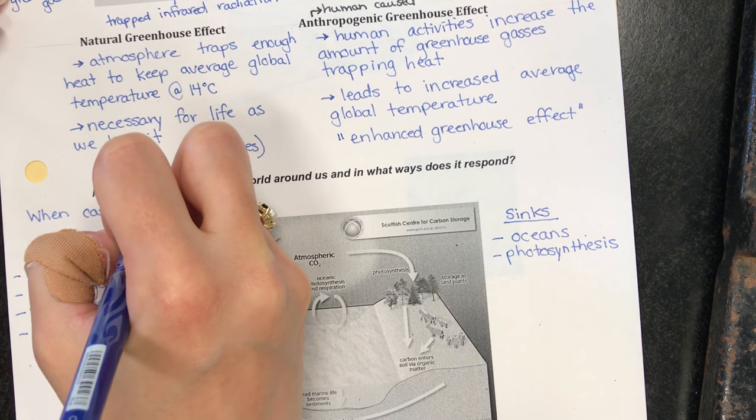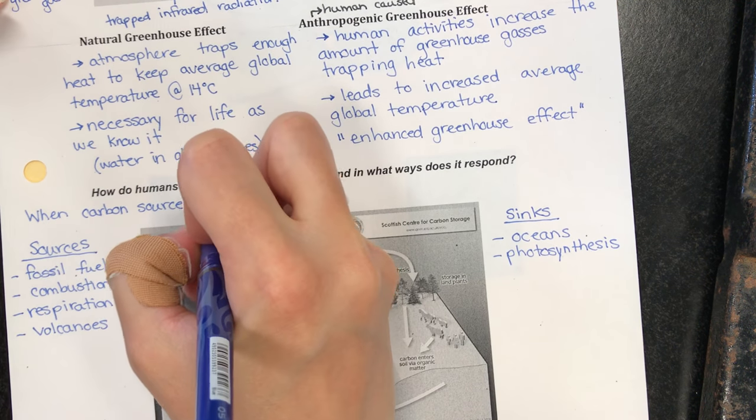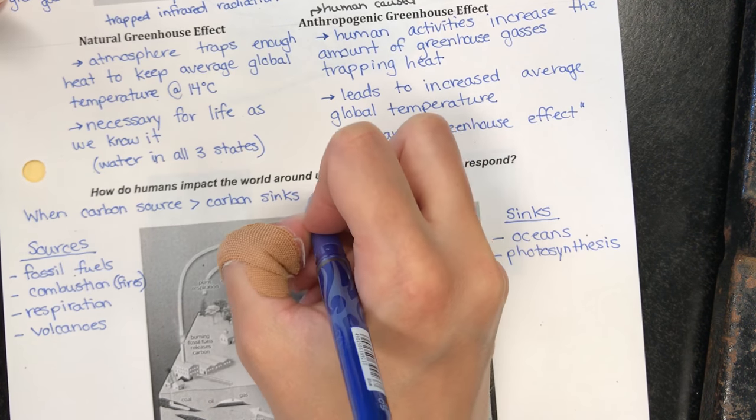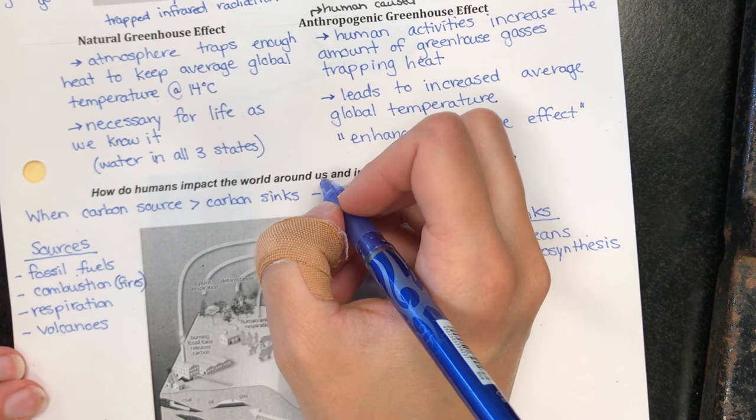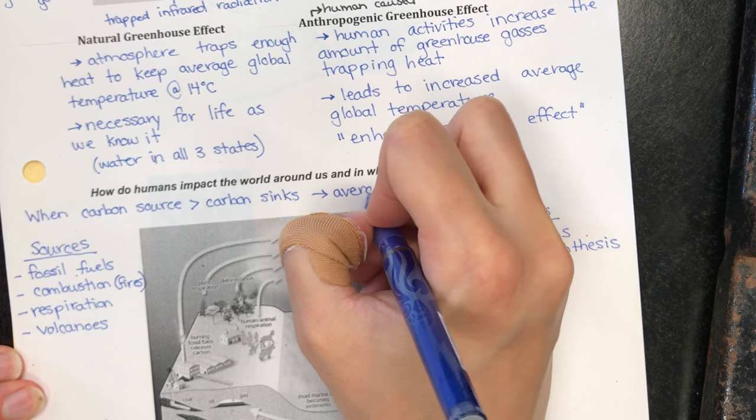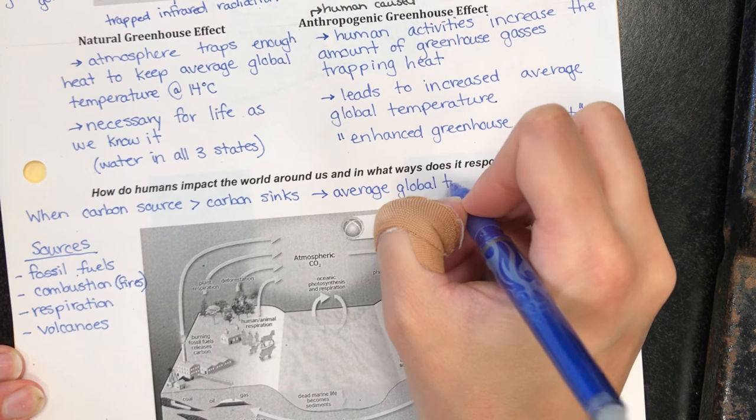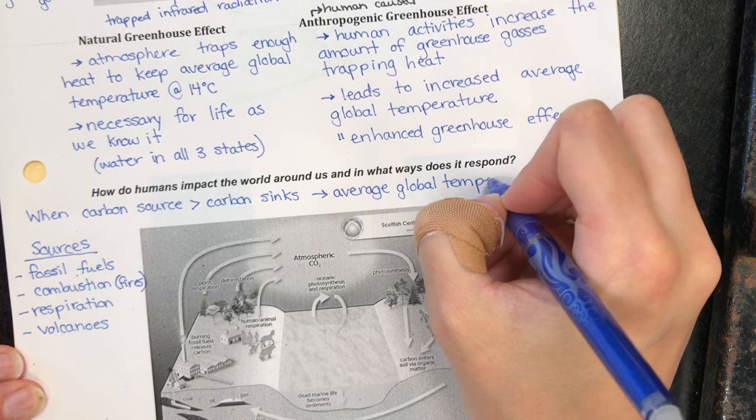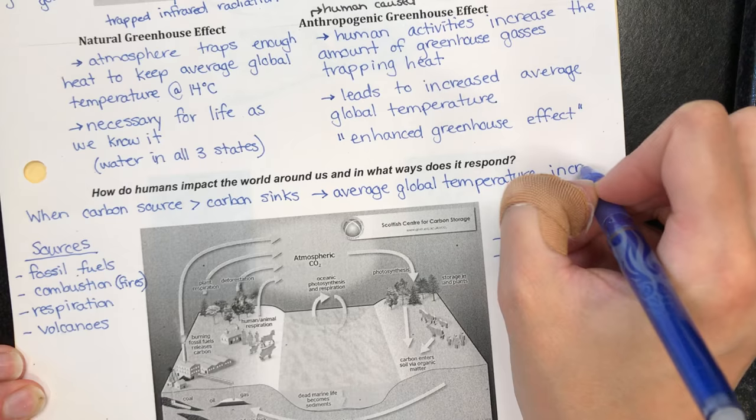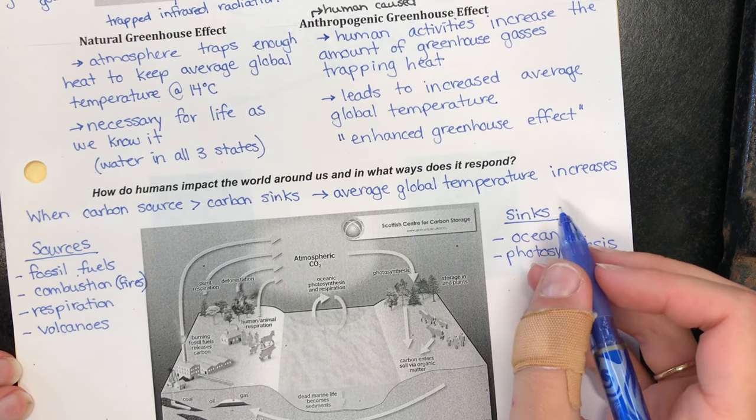When carbon sources are greater than or outweigh our carbon sinks, we get an increase in global temperature, so average global temperature increases. That's why a lot of people refer to it as global warming.